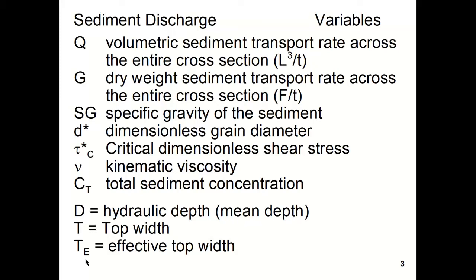The sediment discharge, capital Q, is not the flow in this example. It's the volumetric sediment transport rate across the entire cross section. Similar for the capital G sub T. The other variables we have pretty much used in the previous examples, with the exception of C sub T, which is the total sediment concentration.